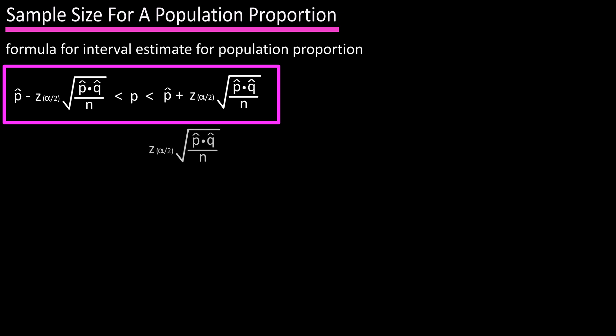In this formula, z alpha over 2 times the square root of the quantity p hat times q hat divided by n is the margin of error, which we can label as big E. N, or the sample size, is important in statistics. We can do some math and set this formula equal to n, in which we get n equals p hat times q hat times the quantity z alpha over 2 divided by big E squared.